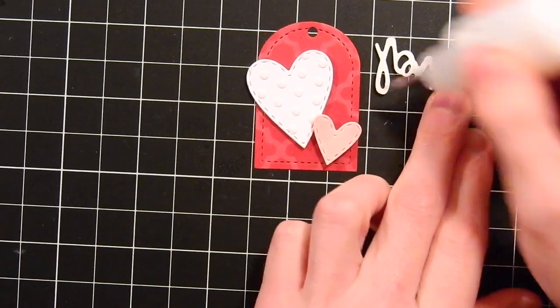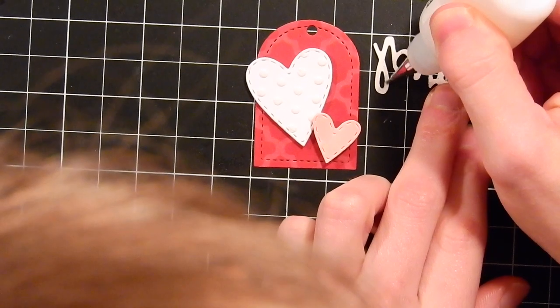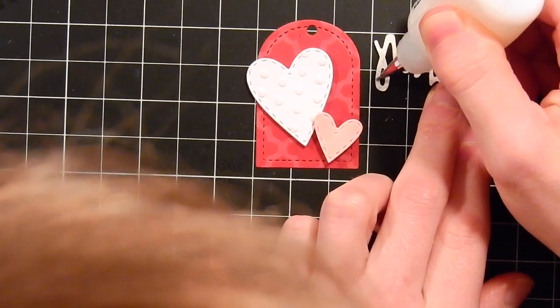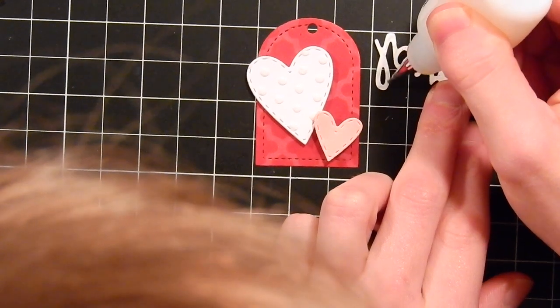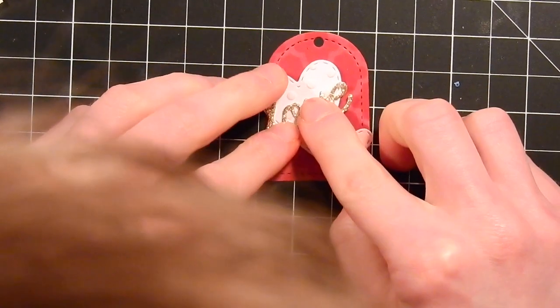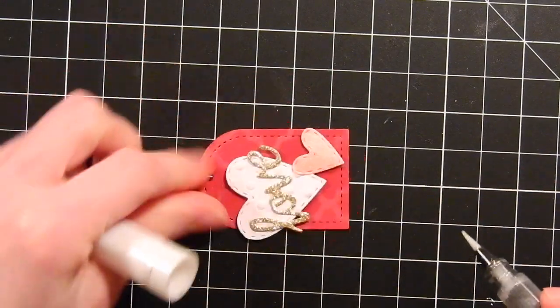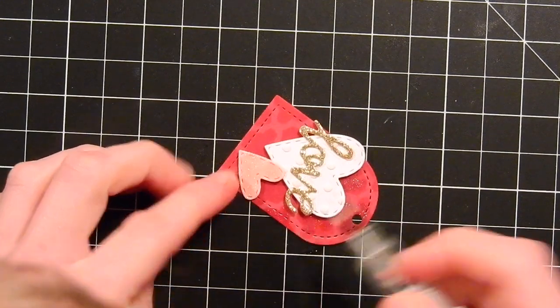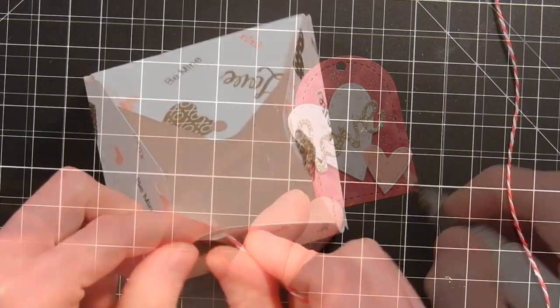For the little love die I'm going to go ahead and use some PPA matte adhesive and I'm going to run this along here to adhere this down onto the white heart. I love the PPA glue because it's a strong matte adhesive that doesn't show up when you've used it on projects. With some Wink of Stella I'm going to go ahead and apply this down onto portions of this tag to give it a little sparkle and shine. This is the clear Wink of Stella brush. I love using this on pretty much everything I make.